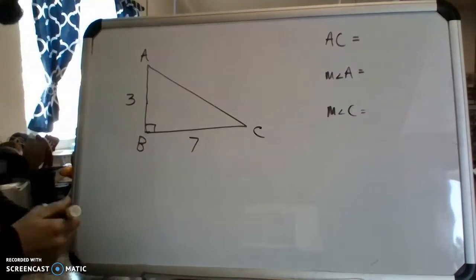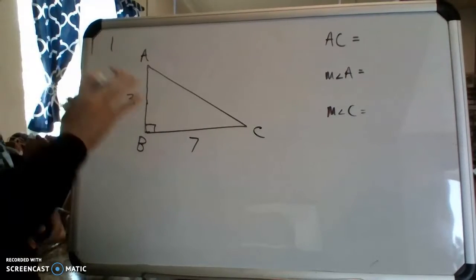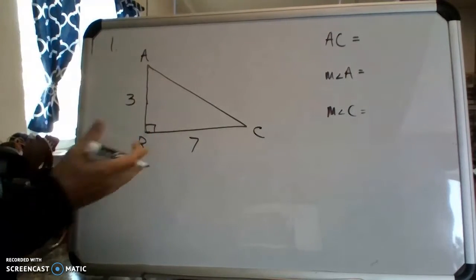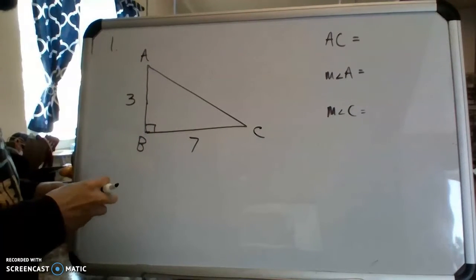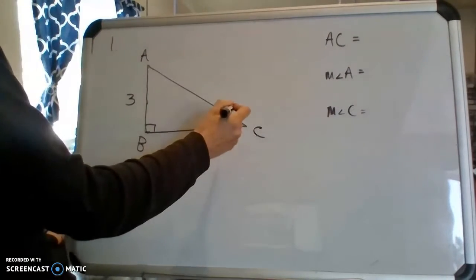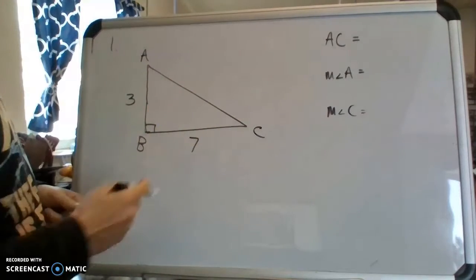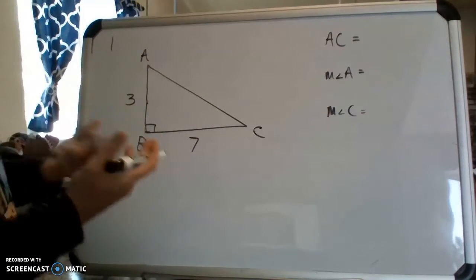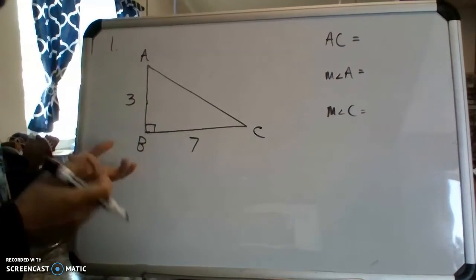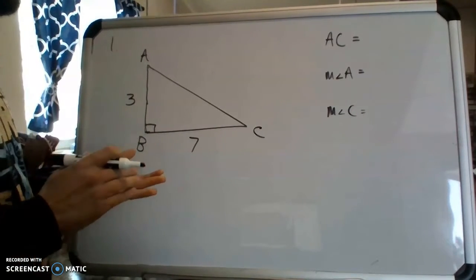Let's get started with number one. I've already got it on the board here. The instructions tell us that we need to solve all the missing parts of the triangle. In this triangle I've listed the missing parts. We're missing the side length of AC which is the hypotenuse. We're also missing angle A and angle C. Now remember we've got three methods to solve, well technically four.